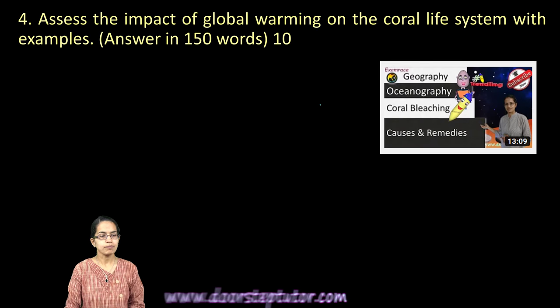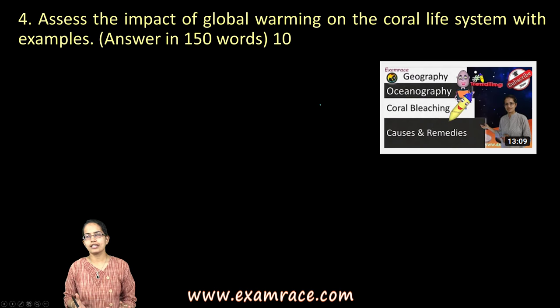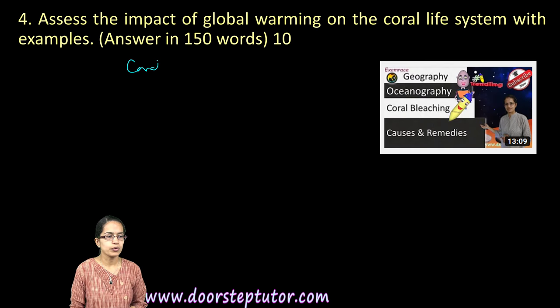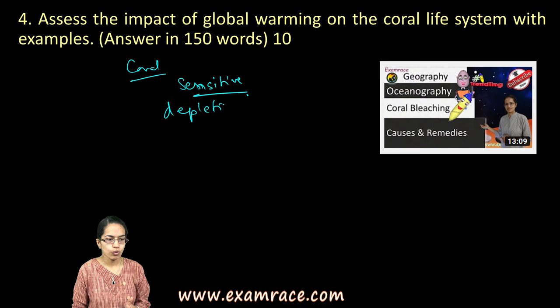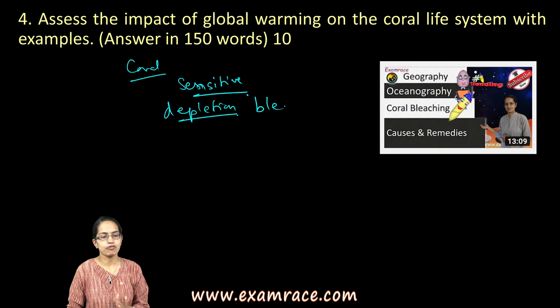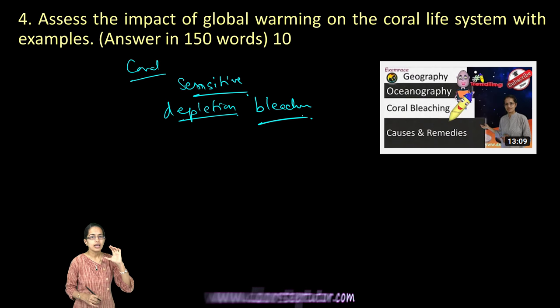The next question assesses the impact of global warming on coral life. You must briefly explain what corals are, the sensitive temperature range under which they can survive, and what leads to coral bleaching. Temperature rise is a major factor, as corals have a very narrow zone within which they can tolerate temperature variations — beyond that, bleaching occurs immediately.